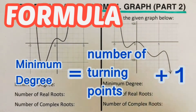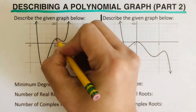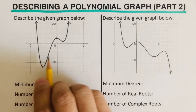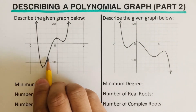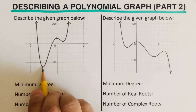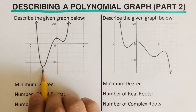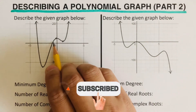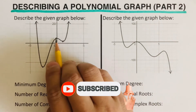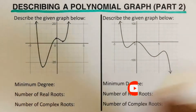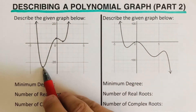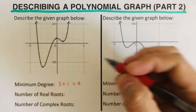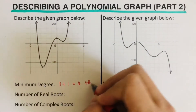In this first problem, we count the number of turning points: one, two, and three. So there are three turning points. A turning point is where the graph changes direction — going from downward to upward, or upward to downward. Since we have three turning points, three plus one equals four. So this is a fourth-degree polynomial.